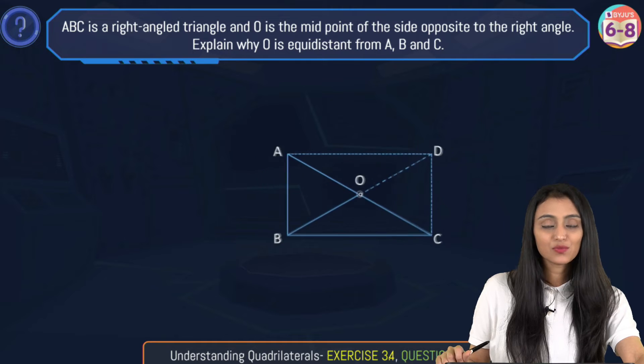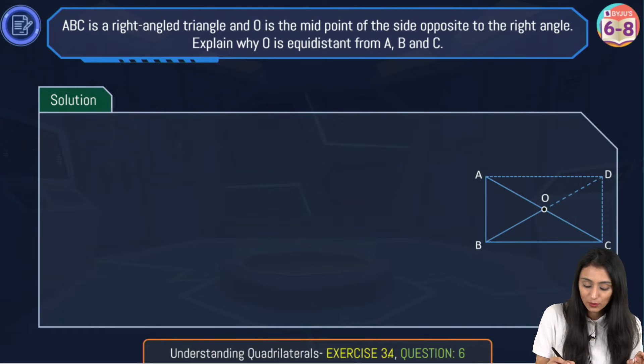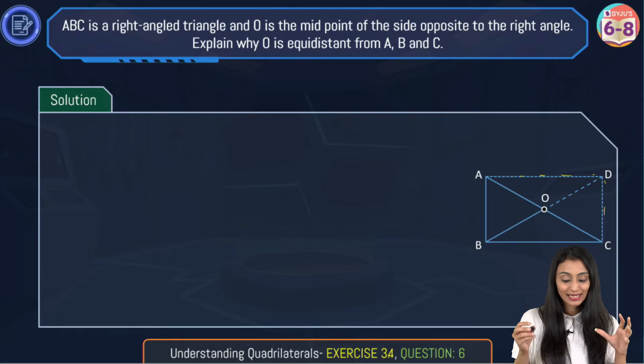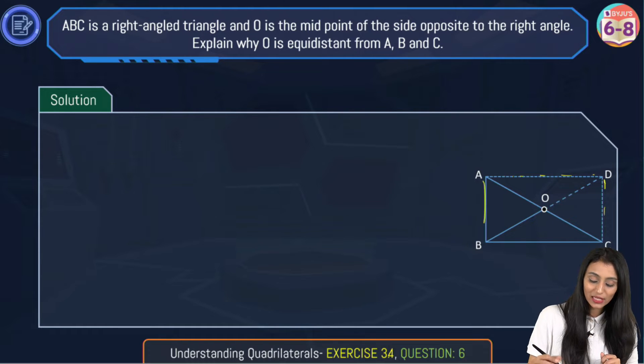To simplify this, first we will construct lines. These dotted lines that we can see over here. We will construct AD and DC in such a way that AD is parallel to BC and AB is parallel to DC.